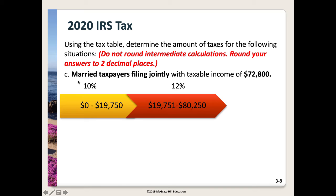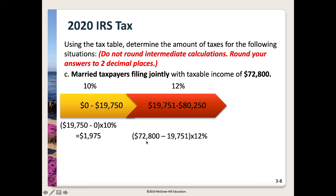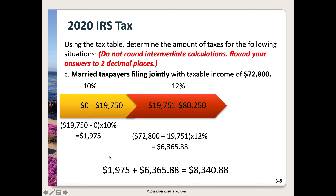In Part C, married taxpayers filing jointly with taxable income of $72,800. The full first bracket amount of $19,750 minus $0 times 10% gives $1,975. Then $72,800 minus $19,751, multiplied by 12%, gives $6,365.88. Adding these two amounts together gives total taxes owed of $8,340.88.